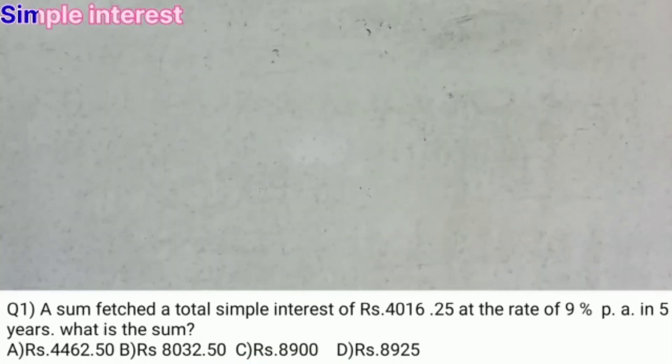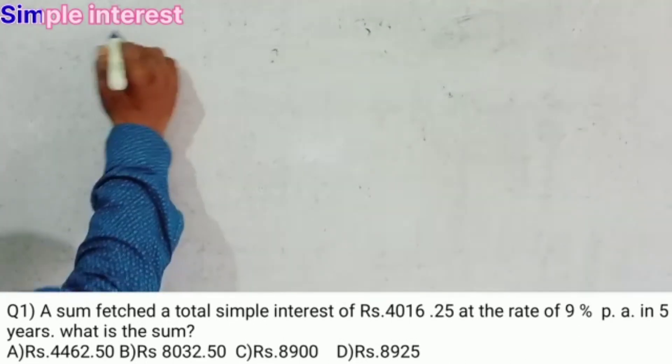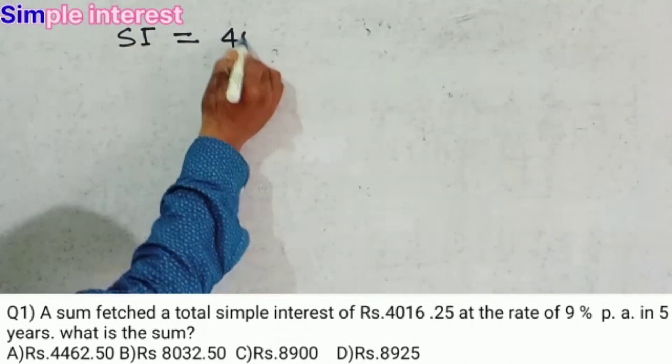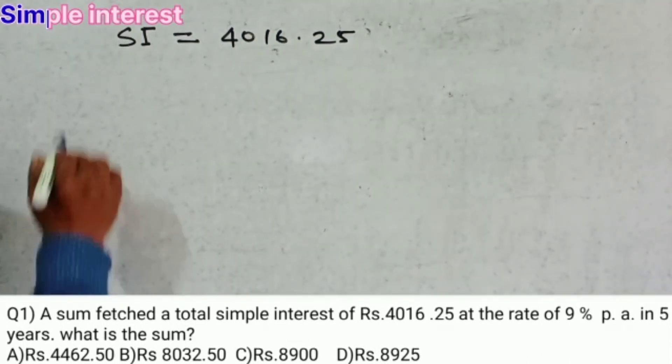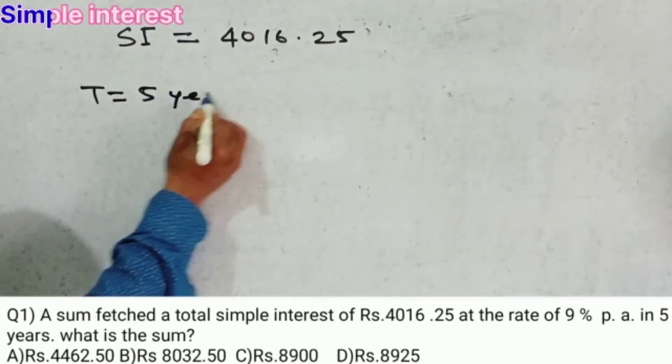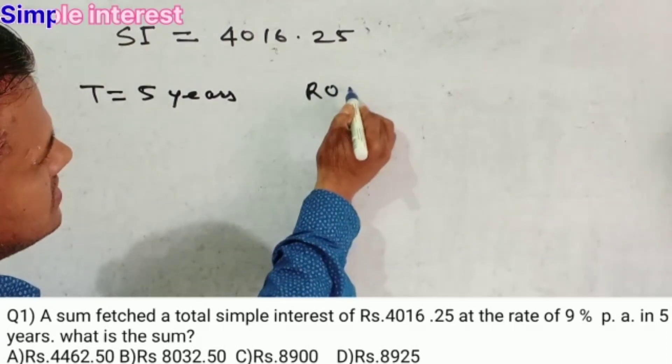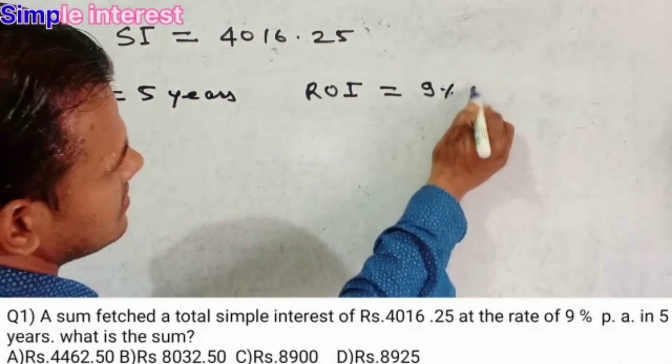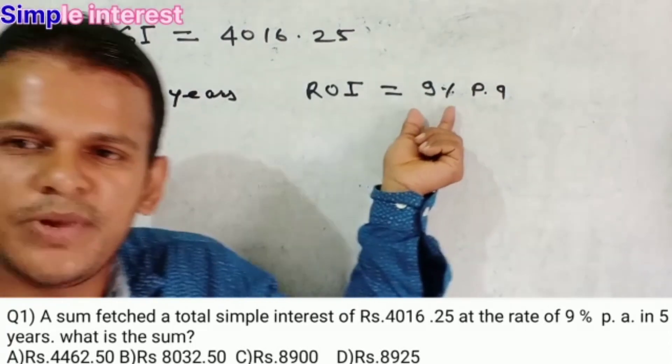Yes, sum fetched total simple interest. Total simple interest is 4016.25. Time is given 5 years. And rate of interest is equal to 9% per annum.